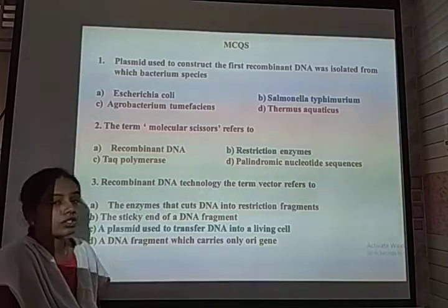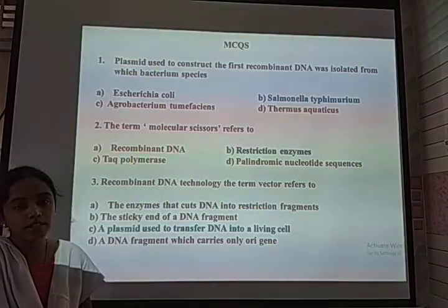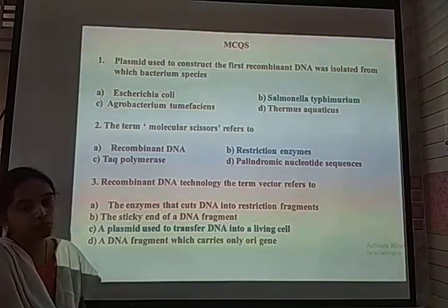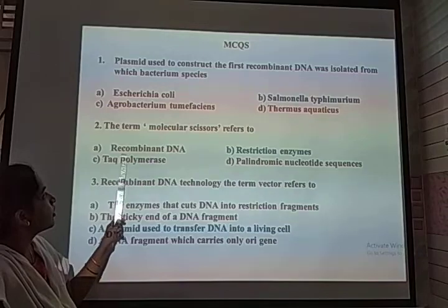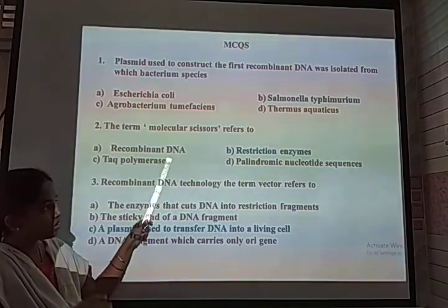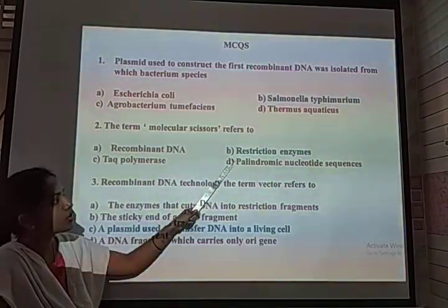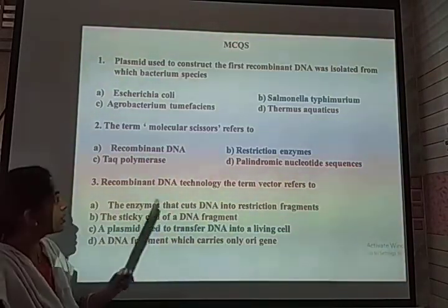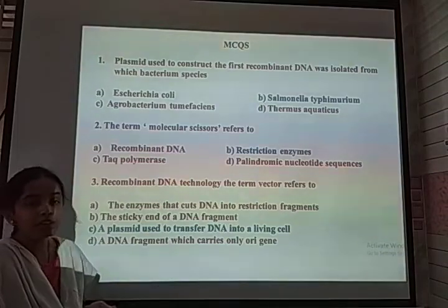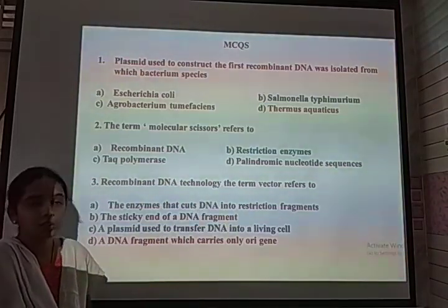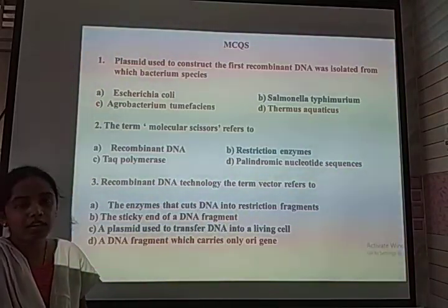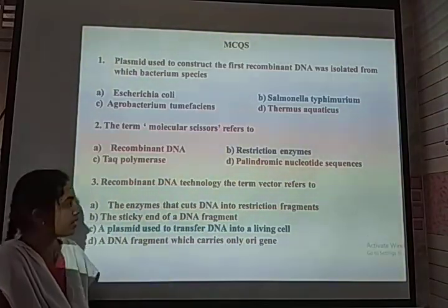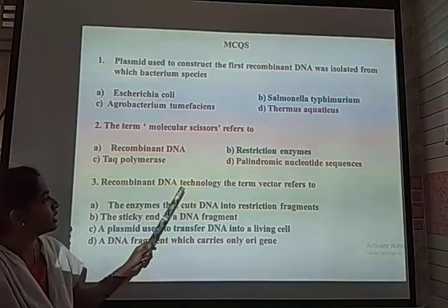The next MCQ: The term 'molecular scissors' refers to restriction enzymes, which are restriction endonucleases. They help to cleave the double-stranded DNA at a specific location. Recombinant DNA consists of the desired gene with a plasmid. Restriction enzymes are commonly called molecular scissors. Taq polymerase is helpful for increasing the DNA. Palindromic sequence is the sequence that reads forward and backward the same. The correct answer for 'molecular scissors' is restriction enzymes.